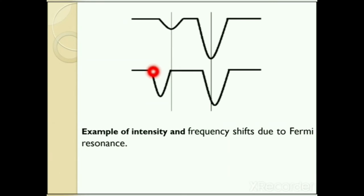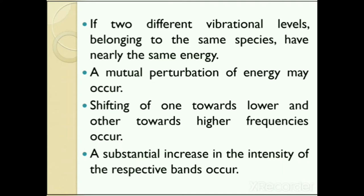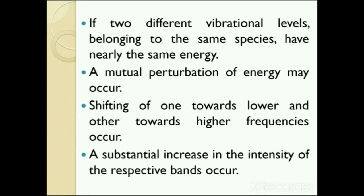In the diagram, the top bands represent two fundamental vibrations without Fermi resonance, and the bottom bands show the change as a result of Fermi resonance. The two energy levels are split such that one increases and the other decreases in energy — this is known as a Fermi doublet, and they move away from each other. Due to Fermi resonance, one band shifts to the lower frequency region while the other shifts to the higher frequency region. A molecule thus transfers its energy from the fundamental vibration level to the overtone or combination tone level and back.